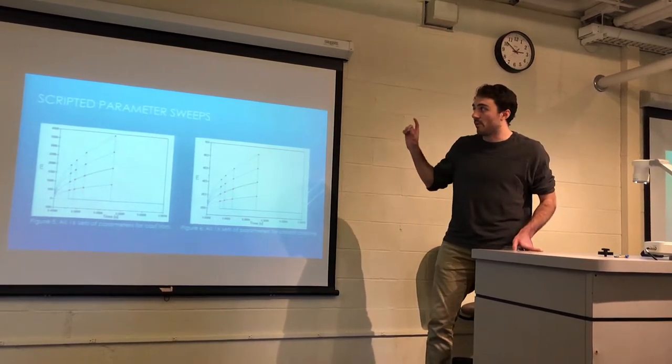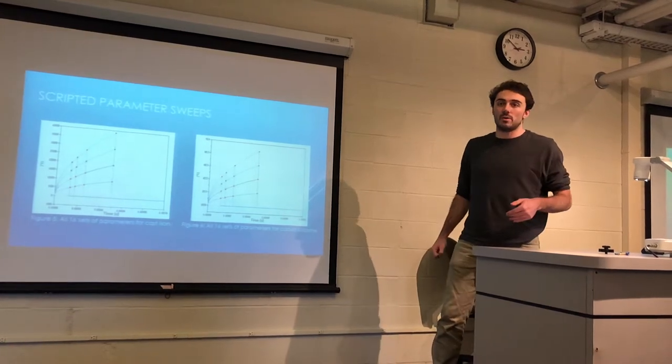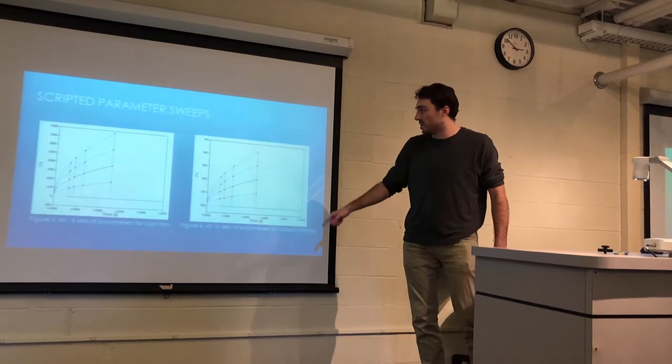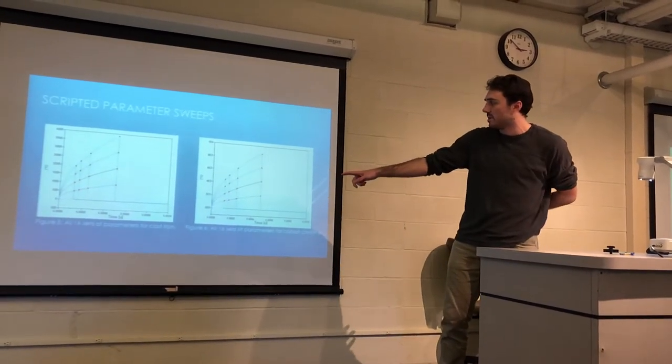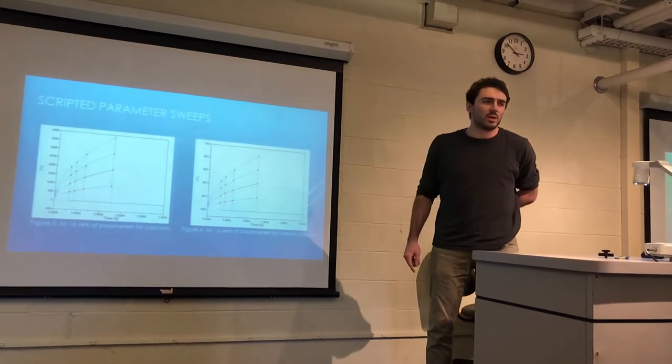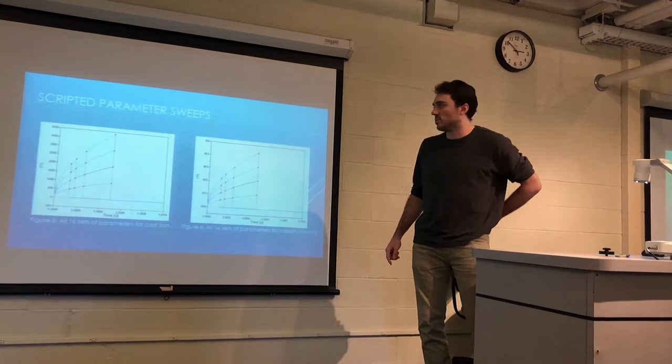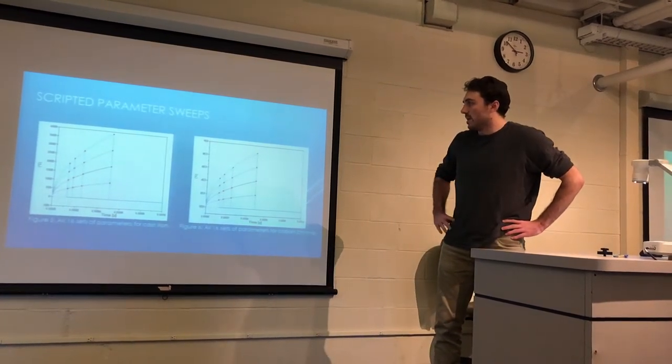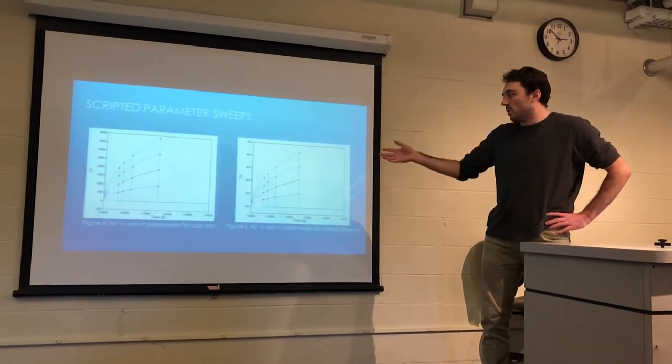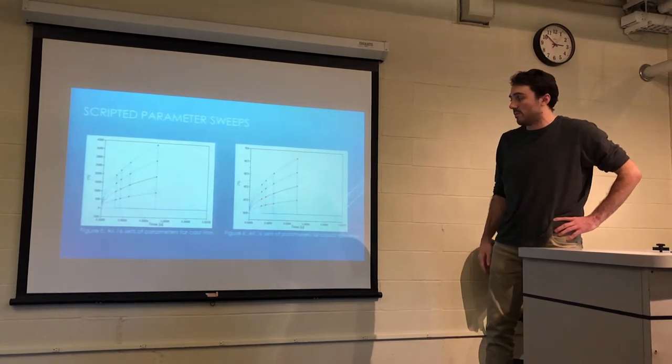So I ran a parameter sweep for laser power and scan speed through the model in just one script. And I plotted it for two different metals. So on the right, there's cast iron. And on the left, you can see cobalt chrome, which is one of those super alloys that I think is used in medical situations. But each red point is the maximum of each of the curves. So they kind of light up in that sort of fashion because of the way that it's modeled.